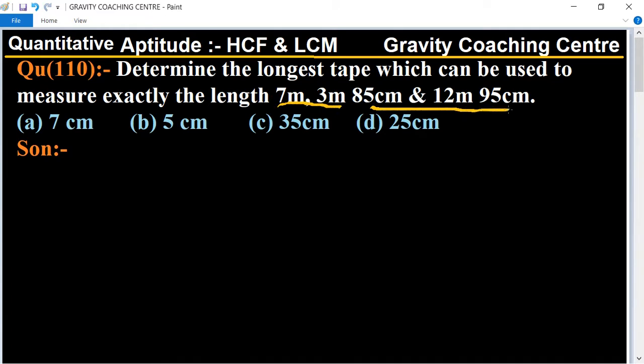First of all we will change the lengths into centimeters. 7 meter equals 700 centimeter and 3 meter 85 centimeter equals 385 centimeter.